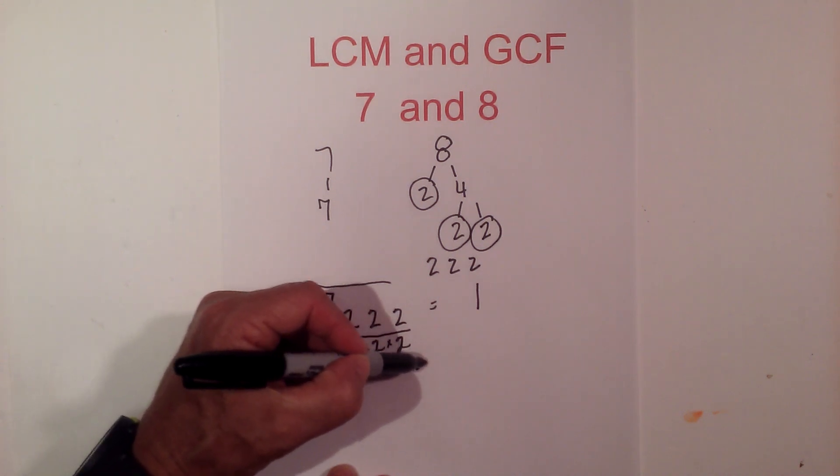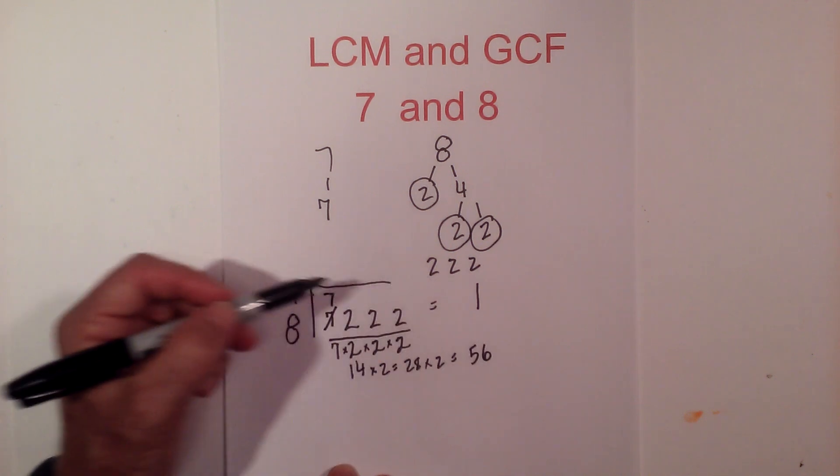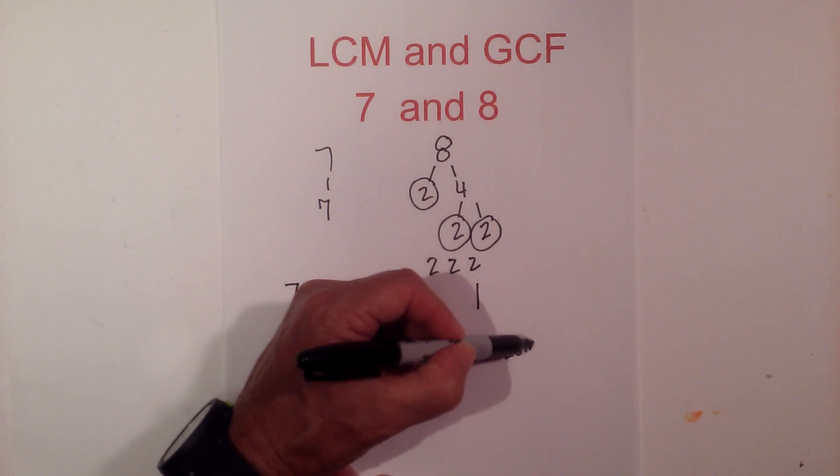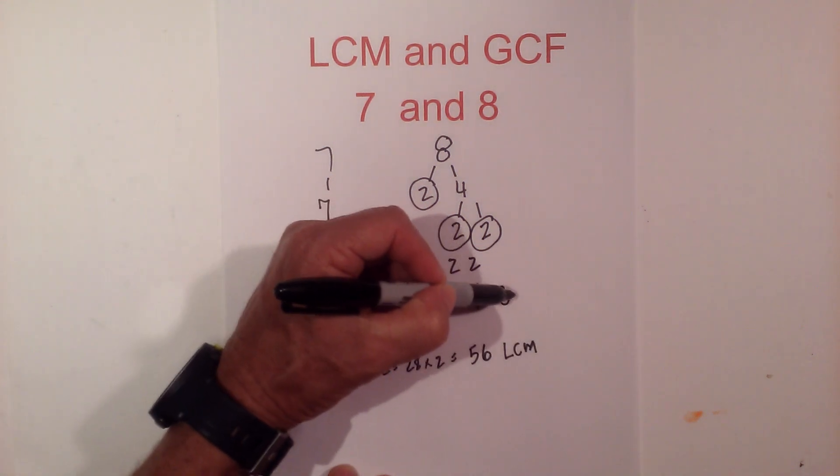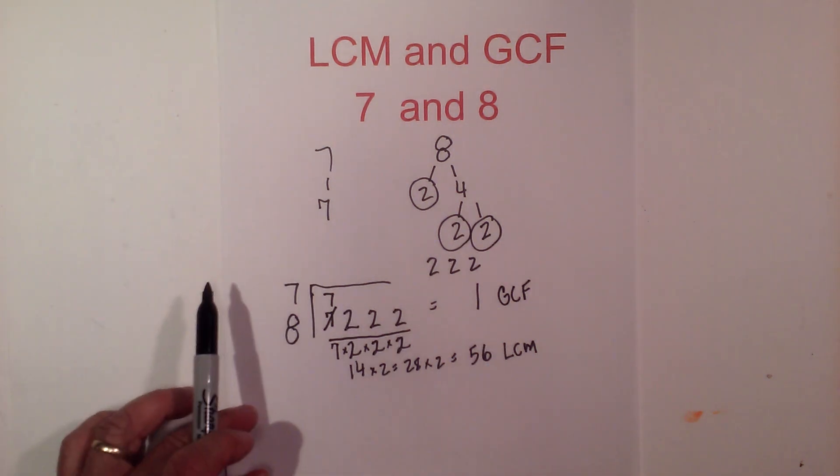Times 2 equals 56. So the lowest common multiple is 56, the greatest common factor is 1, and some people call that the least common multiple.